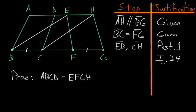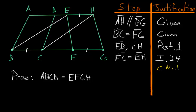From here, we want to use Book 1, Proposition 34, which says that in a parallelogram, opposite sides are equal to each other. Notice that in this parallelogram, side FG is opposite to side EH, so FG equals EH. Since BC is also equal to FG, then due to Common Notion 1, BC must also be equal to EH.